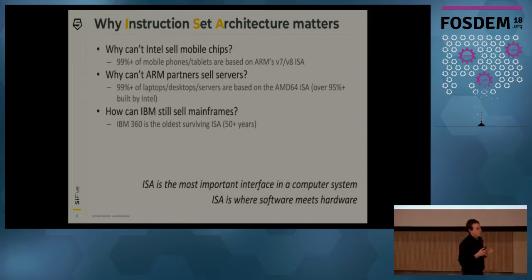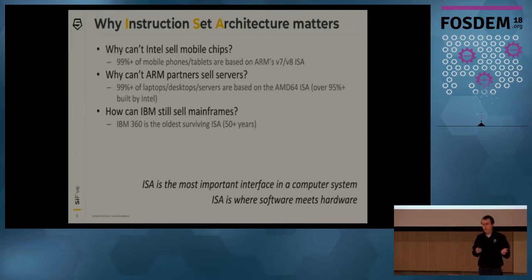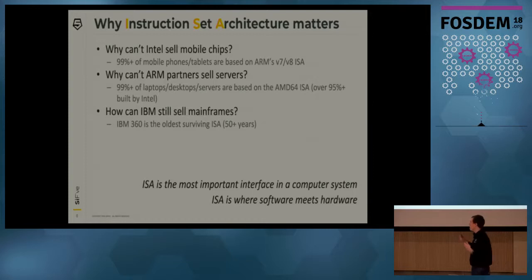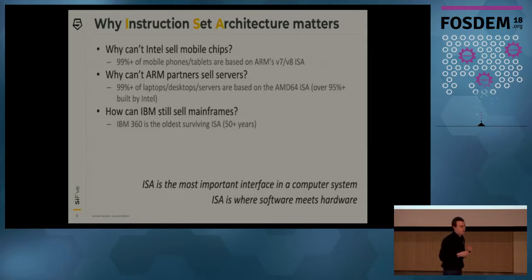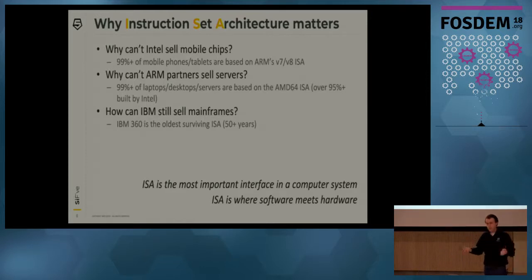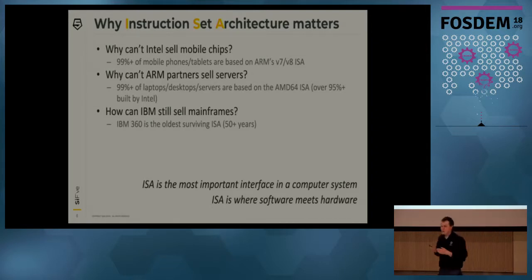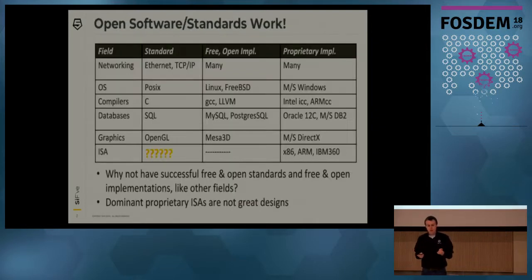I went to a talk earlier today about porting code from Python 2 to Python 3 and it was a 10-year process. IBM's 360, the longest-lived ISA, has been around for 50 years and will probably outlive all of us. So it's a very, very important interface, and there is no free and open ISA.